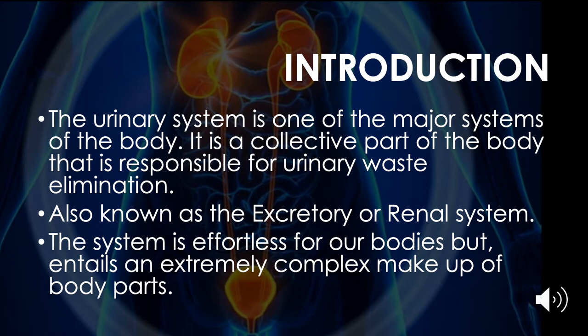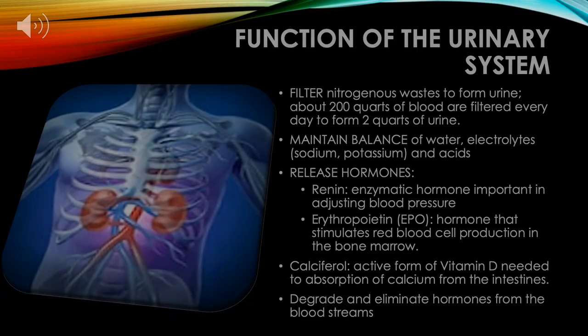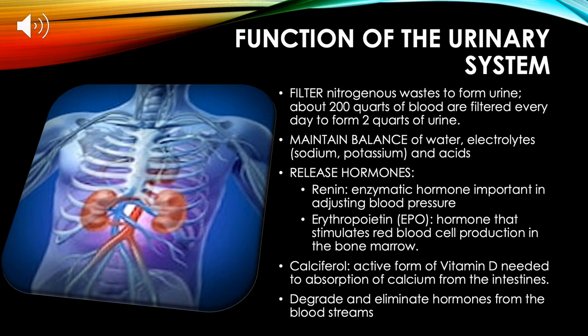Function of the urinary system: it filters nitrogenous waste from the urine. About 200 quarts of our blood are filtered every day to form two quarts of urine. It maintains balance of water, electrolytes like sodium and potassium, and acids. It releases hormones like renin and erythropoietin. Renin is an enzymatic hormone important in adjusting blood pressure.